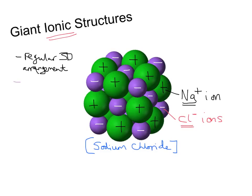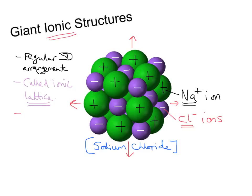An ionic lattice — that's the word to use in an exam. The ionic bonds here act in all directions. We can represent that with arrows on the diagram, and on diagrams in books and on the internet you might find those particular arrows shown. So the ionic bonds act in all directions.